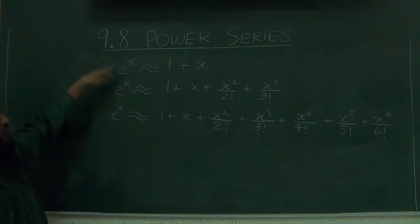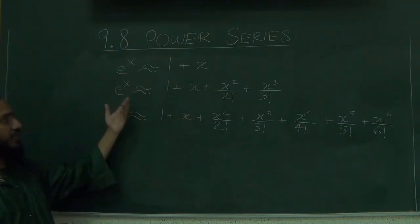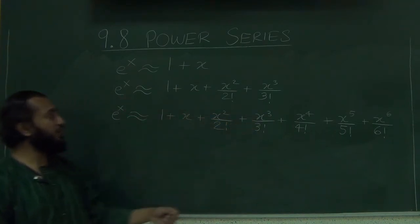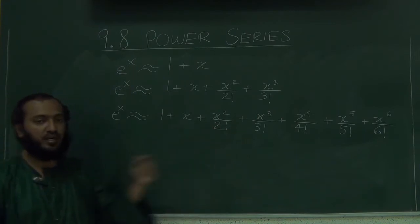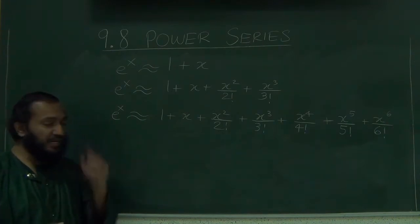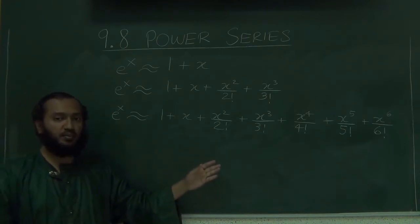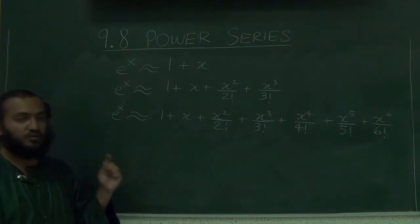Just for instance, you have e to the x. Here is a first degree McLaurin polynomial of e to the x at c equals 0. This is third degree approximation. This is sixth degree approximation. We also saw in the last section, the higher the degree of the polynomial, the better the approximation. But nevertheless, it remains an approximation. Even if you did 500th degree polynomial approximation of e to the x, it would still be an approximation.